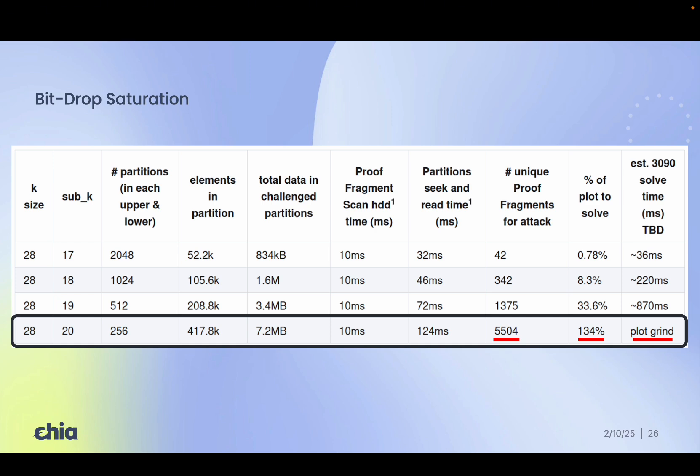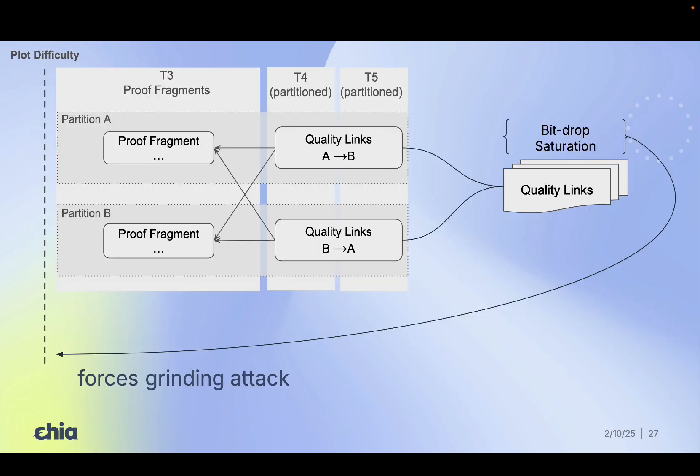This creates what we call bit drop saturation, a state where attackers can't drop additional bits without paying a higher cost than just re-plotting. So this effectively pushes attacks back to grinding, which is something we can directly defend against using the plot difficulty barrier.